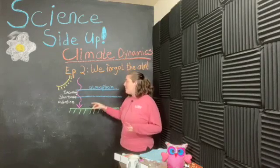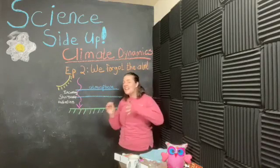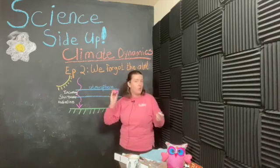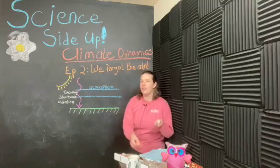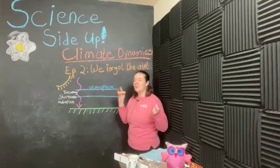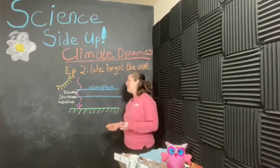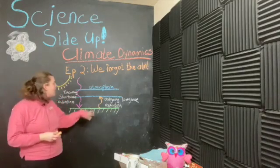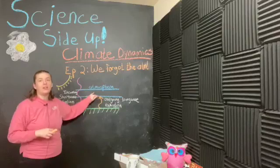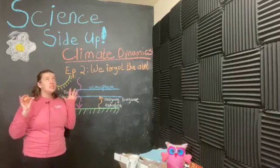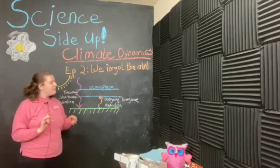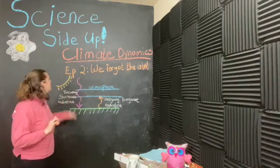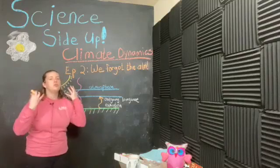In general, our atmosphere is transparent to the incoming solar radiation. But when we have the outgoing longwave radiation from the earth, remembering that the earth emits in that infrared, much longer wavelength, lower frequency, lower energy, when our outgoing longwave radiation from the earth hits the atmosphere, it's going to stop. So for this model, we're going to say that the atmosphere is opaque to that outgoing longwave radiation.